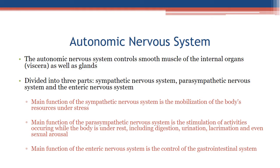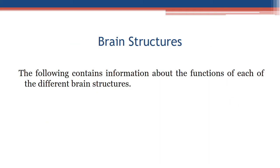Autonomic nervous system: controls smooth muscle of the internal organs (viscera) as well as glands, and is divided into three parts: the sympathetic, parasympathetic, and enteric nervous systems. The sympathetic nervous system mobilizes the body's resources under stress. The parasympathetic nervous system stimulates activities while the body is at rest, including digestion, urination, lacrimation, and sexual arousal. The enteric nervous system controls the gastrointestinal system.